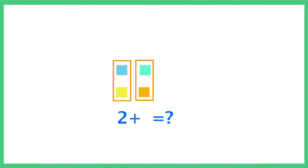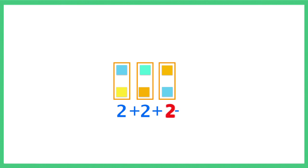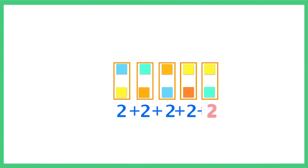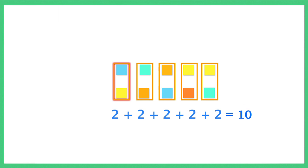Take one group of two counters. Add one more group of two counters. Now we have two groups, with two in each group, and a total of four counters. We can keep adding groups of two every time. When we have five groups of two, it gives us a total of ten. Students must notice that we are adding the same quantity each time. Multiplication is the process of repeated addition.